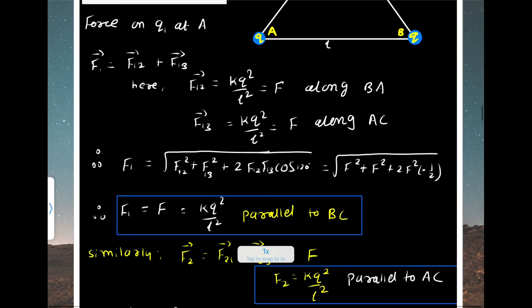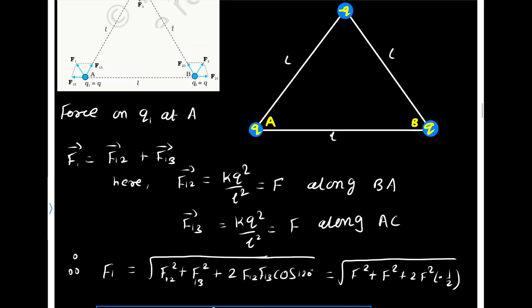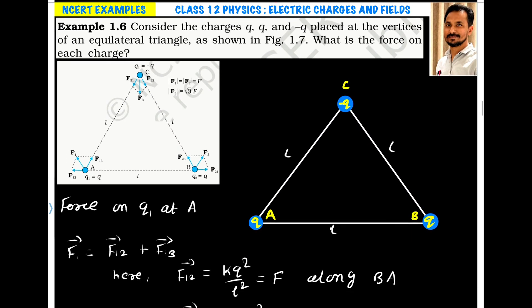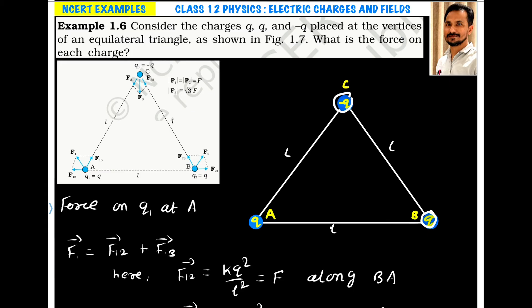So F2, the resultant of F21 and F23, is also equal to KQ squared by L squared, since both forces are equal and the angle between them is 120 degrees. F2 is parallel to AC. Now for the force acting on the charge at C, which is negative: it gets attracted toward A along F31 direction, with magnitude KQ squared by L squared. Similarly, it is attracted toward B along F32 direction, also with magnitude KQ squared by L squared.